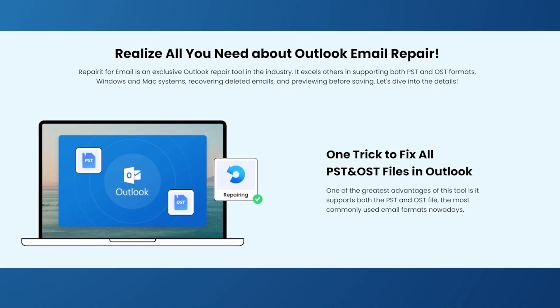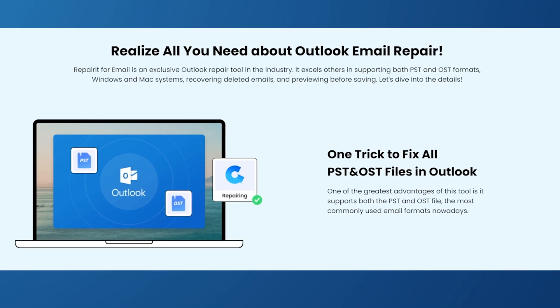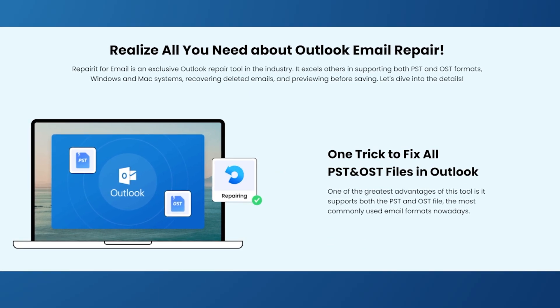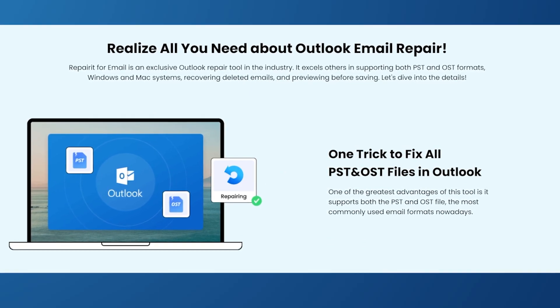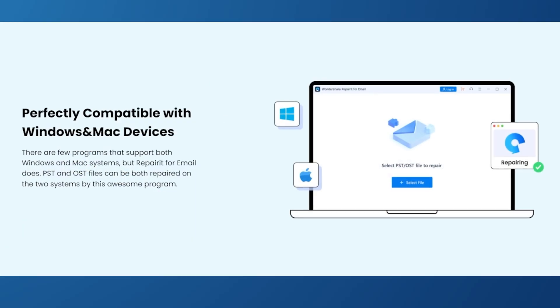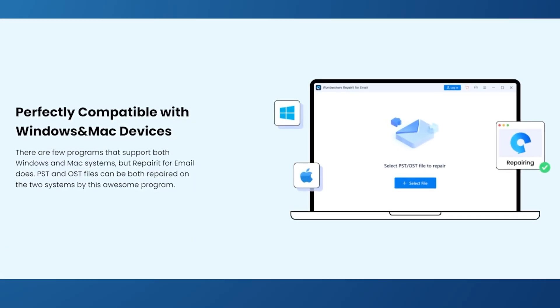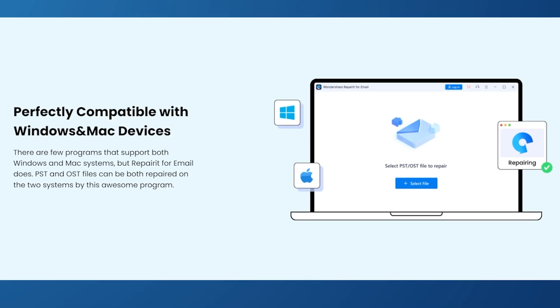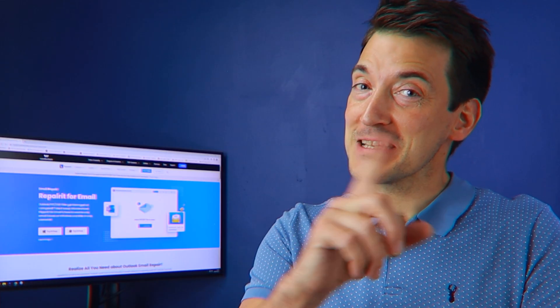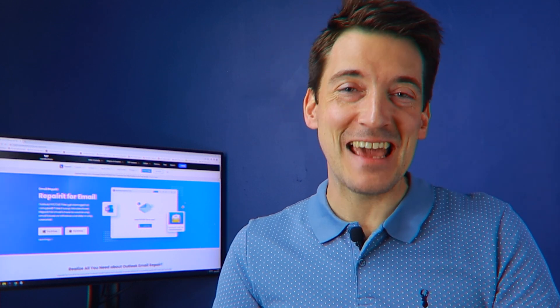Repair-it for Email from Wondershare is a brand new addition to its software family. It is a tool specifically designed to resolve email file corruption issues and fixes them in a matter of seconds. Whether it's Windows or Mac, you can download it easily as per the operating system you use and then you are good to go. Keep watching until the end to learn more about it.